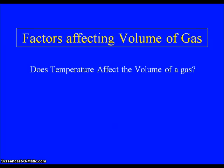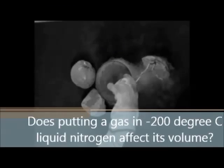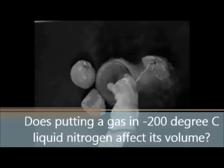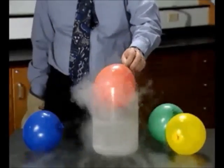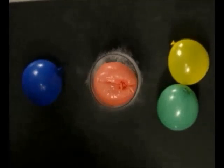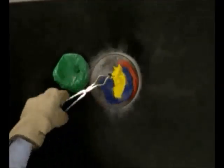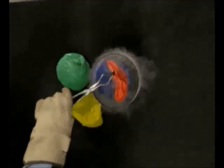Our first question is: does the temperature have any effect on the volume of a gas? When an air-filled balloon at 273 degrees Kelvin is placed into liquid nitrogen at 77 degrees Kelvin, the balloon decreases 1/273rd in volume for each degree drop in temperature.